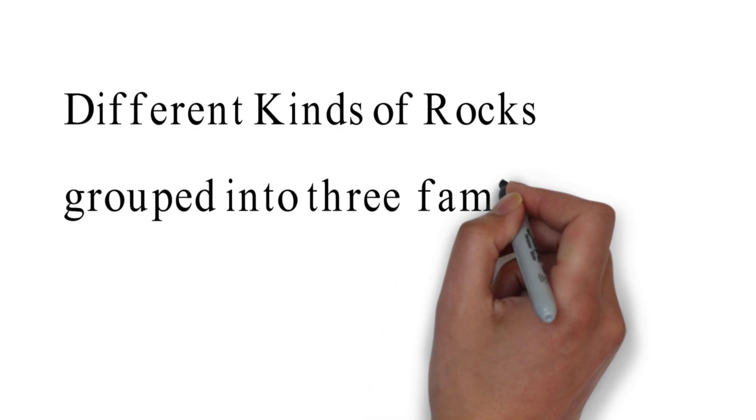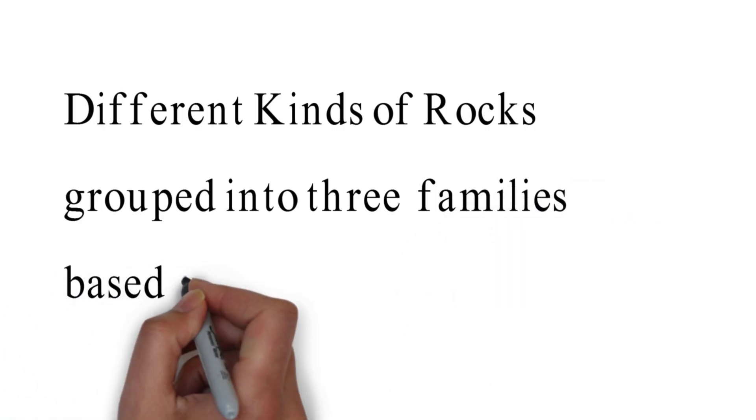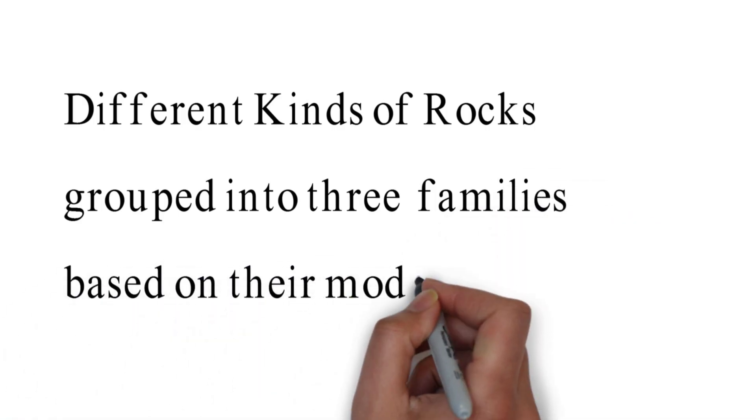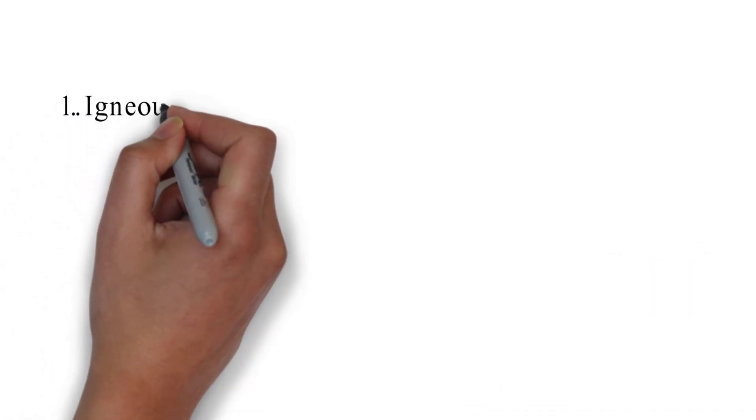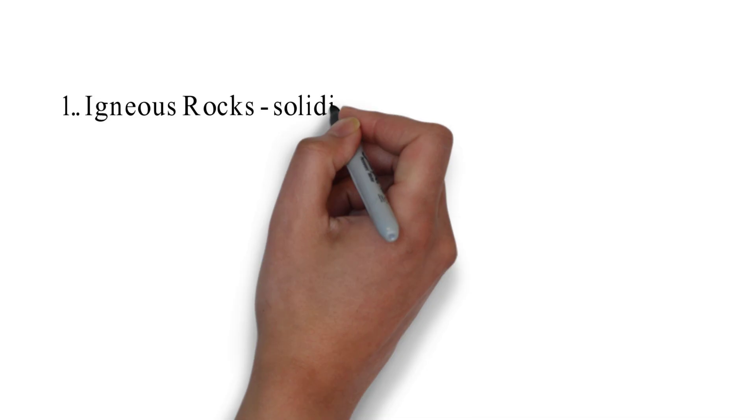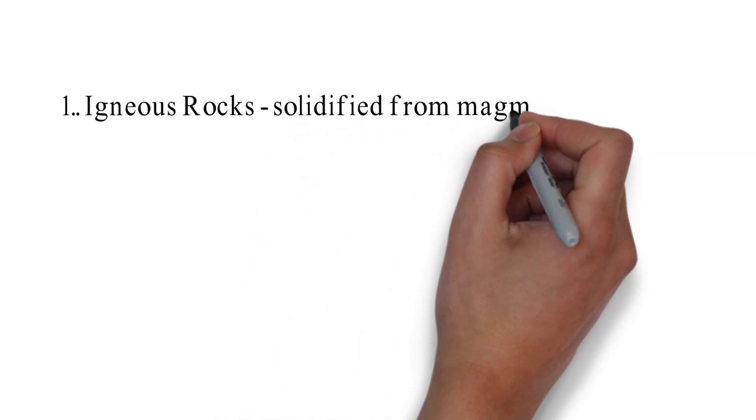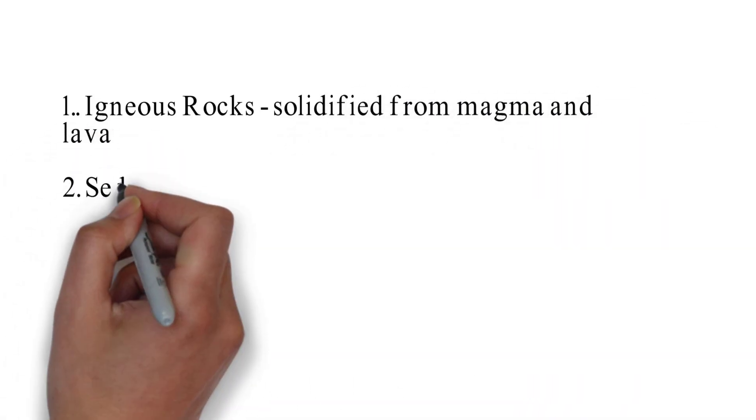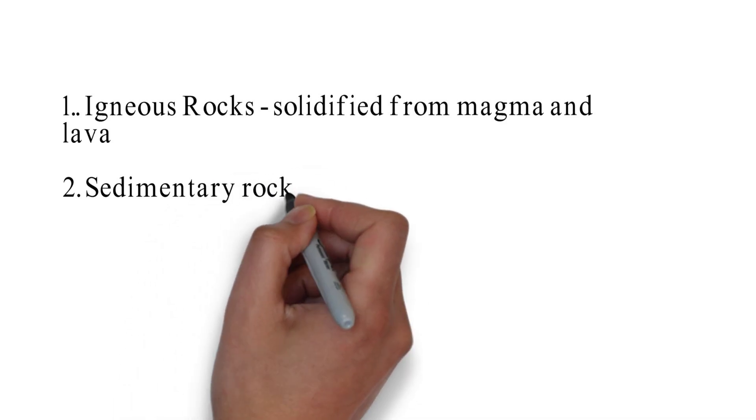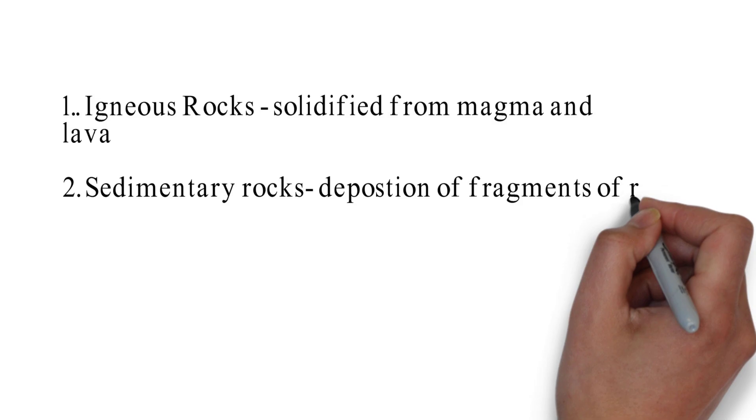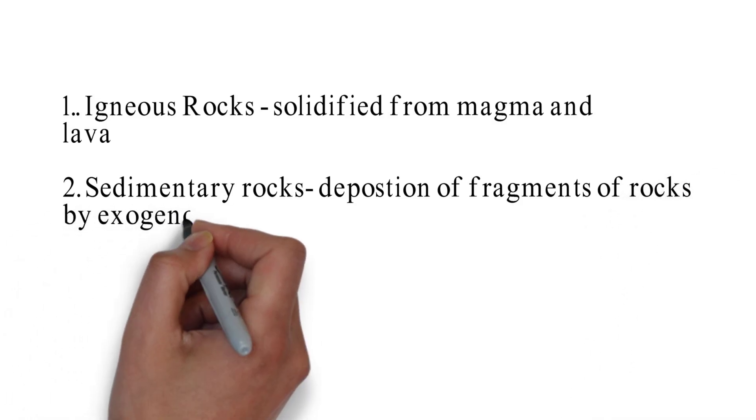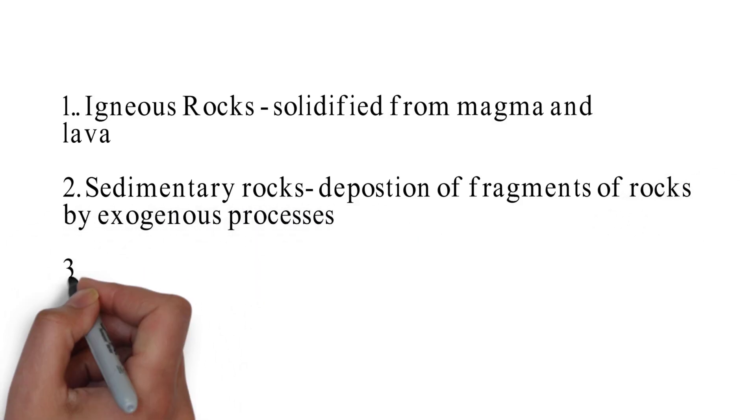These three major rocks are: first, igneous rocks, which is formed after the solidification of magma or lava. Second is sedimentary rocks, which is formed due to the deposition of fragments of rock due to weathering and then carried on by exogenous processes. We will be studying details of how the sedimentary rocks or igneous rocks are formed later on.